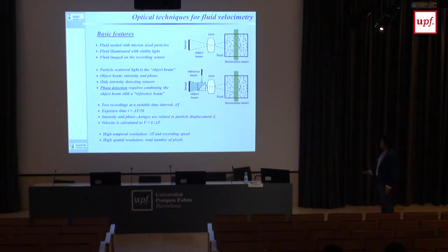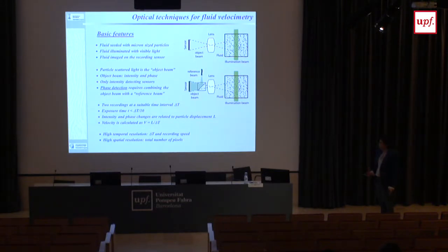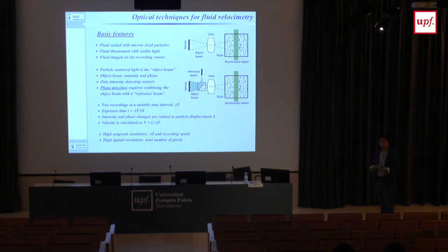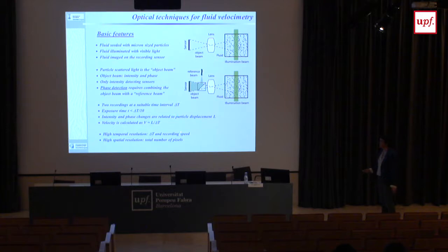We need to take two recordings at a suitable time interval, selectable with our cameras and laser, so that the displacement of the particles is what we want — a few pixels, or nanometers, depending on the technique. As a rule, the exposure time has to be a tenth of the time interval, otherwise the particle would move and instead of a sharp position it would appear as a streak, which does not help. Increasing the exposure time will not help in those circumstances.